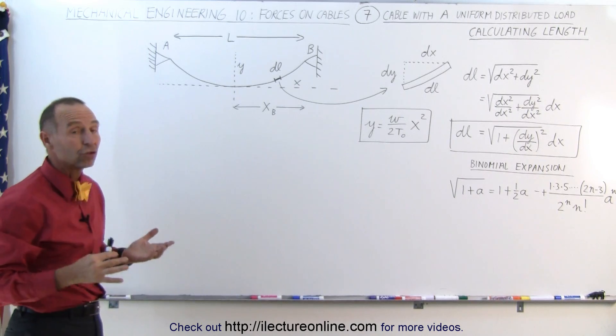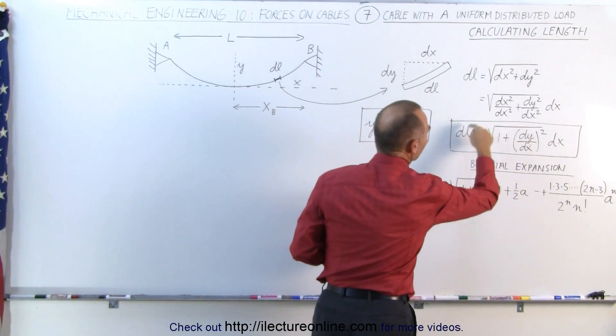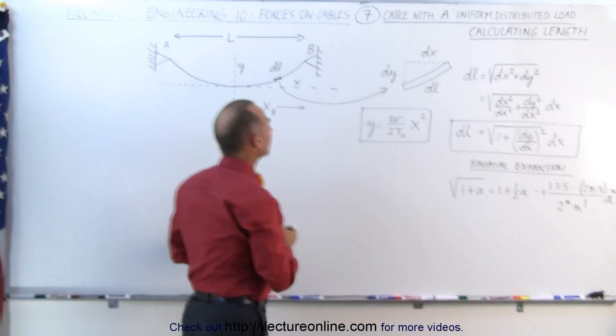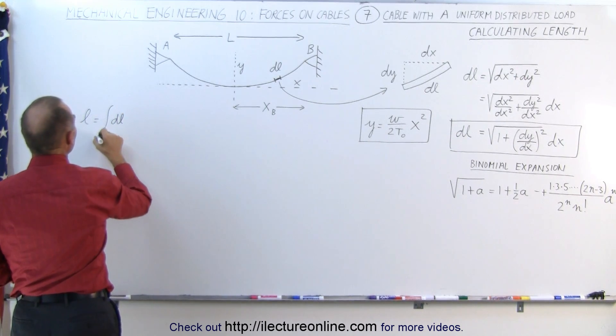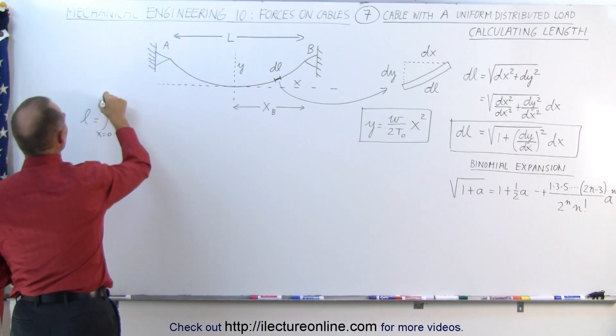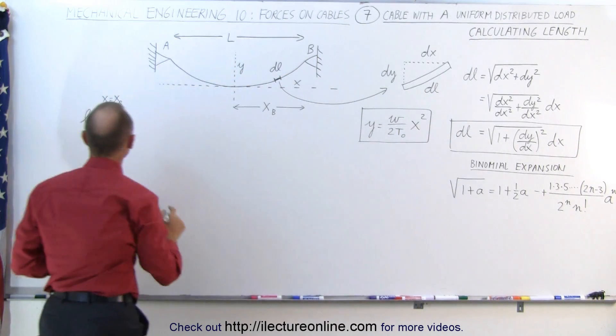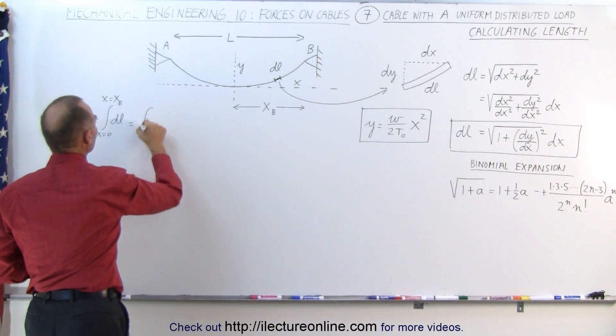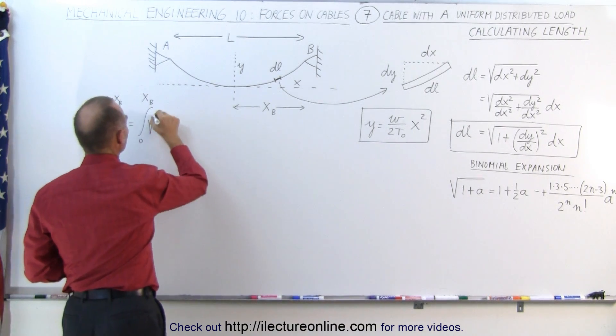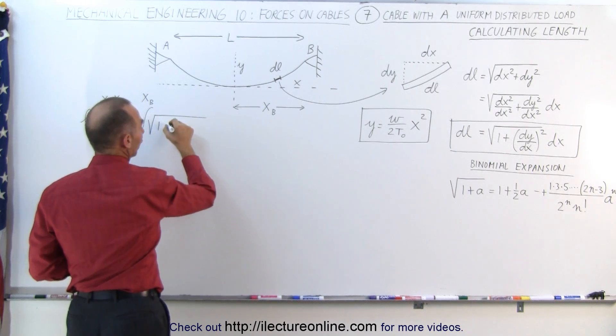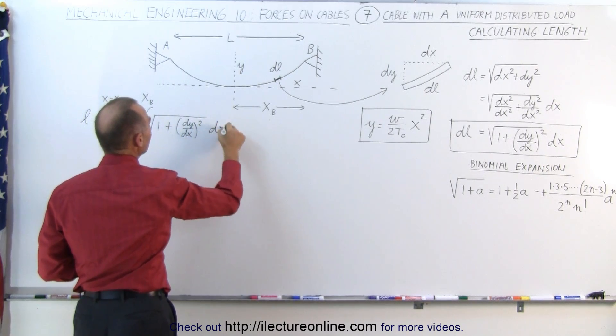Alright, now we're ready to calculate the length. Since we have an equation for the small DL, we then know that the length L will simply be the integral of the DL. We're going to integrate from X equals 0 to X equals X sub B, so we're going to calculate this length of the cable right here. This is therefore equal to the integral from 0 to X sub B of the square root of 1 plus (DY/DX) quantity squared times DX.